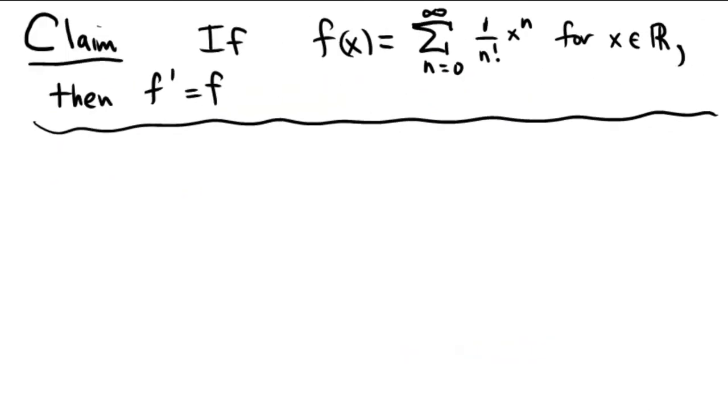This problem says that if f of x equals the sum of 1 over n factorial times x to the n for x in the real numbers, then f prime equals f.